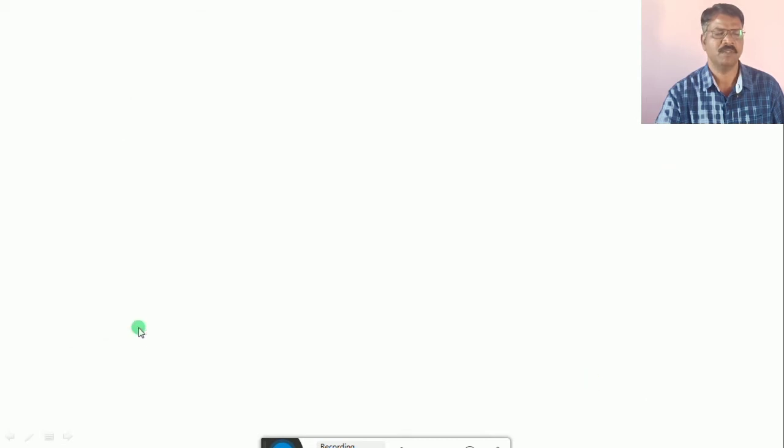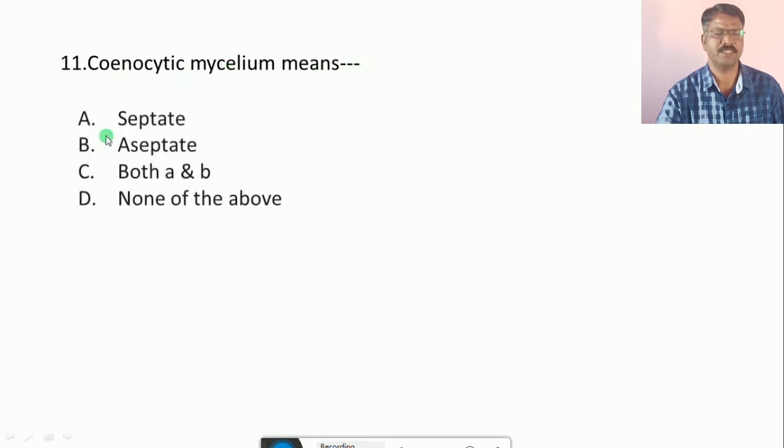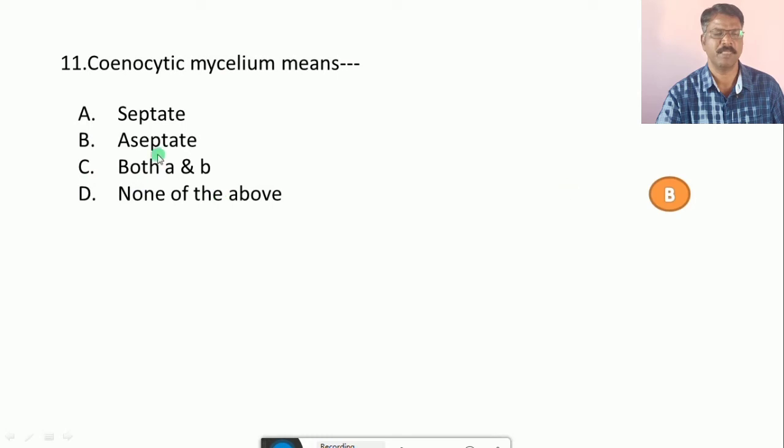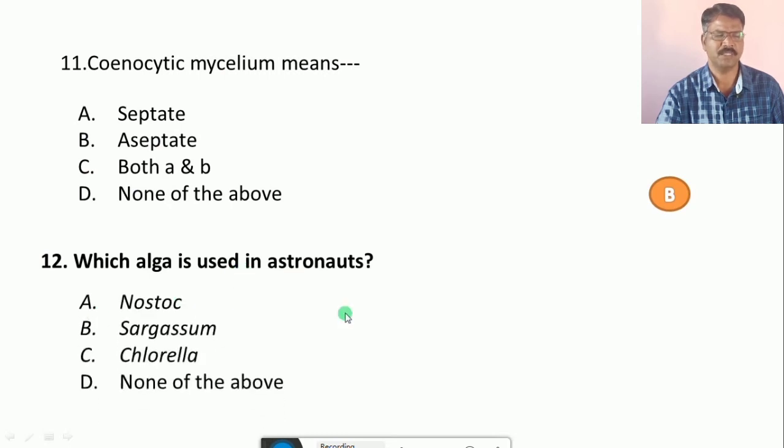Question number 11: Coenocytic Mycelium means... Their options are A. Septate Mycelium, B. Aseptate Mycelium, C. Both A and B, D. None of the above. The correct answer is B, that is Aseptate Mycelium. Question number 12: Which Alga is used in astronauts? A. Nostoc, B. Sargassum, C. Chlorella, D. None of the above. The correct answer is C, that is Chlorella.